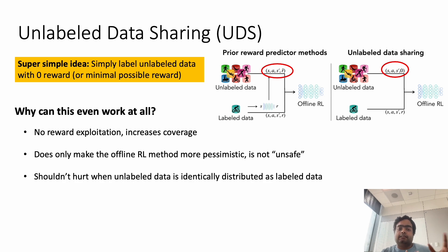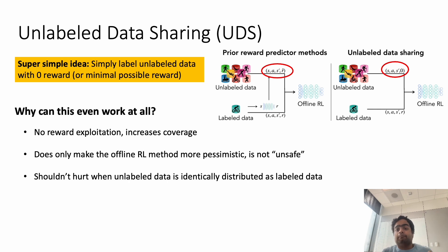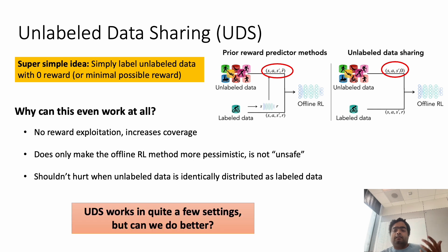We also theoretically show there are several cases where UDS shouldn't actually hurt. For example, when the unlabeled data is identically distributed as the labeled dataset, UDS would only end up scaling up the reward function effectively and shouldn't affect the learned policy, which is quite a big plus. Empirically, we show in the paper there are many cases where UDS works well in practice. However, there is a natural question: UDS does induce a lot of reward bias, so can we actually do better than this naive strategy somehow?